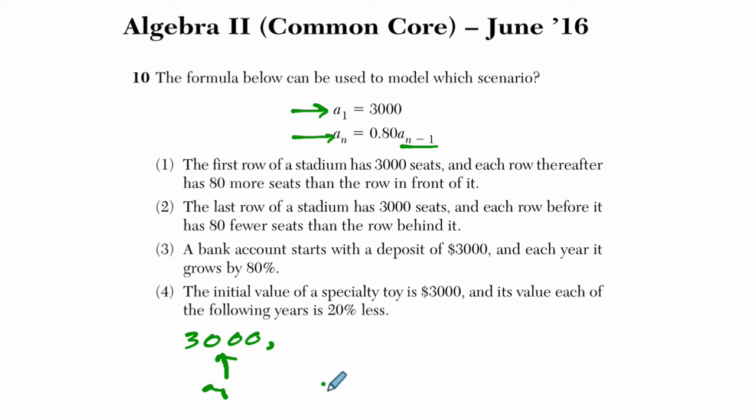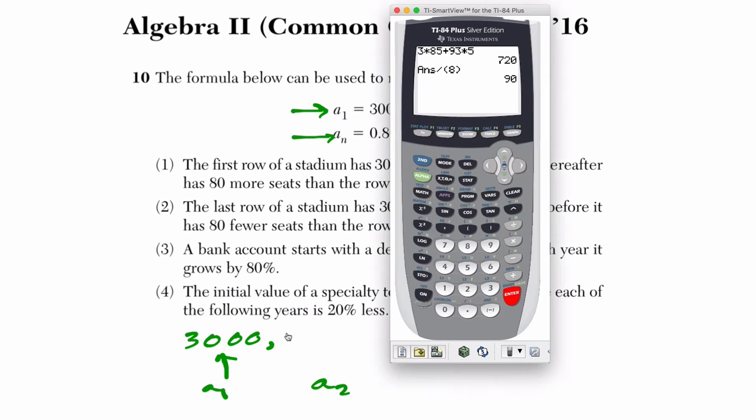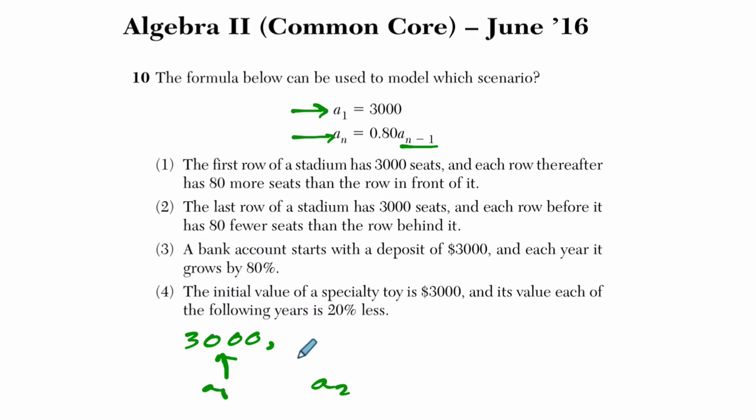So if I want to find the second term, I take the first term and multiply that by 0.8. What do I get there? Let me just pull a calculator real quick. So 3,000 times 0.8 equals 2,400. So the second term is 0.8 times the first term and we get 2,400 and so on and so forth.